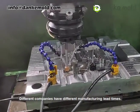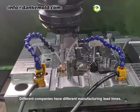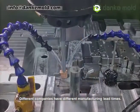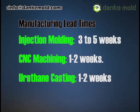Different companies have different manufacturing lead times. In general, an injection molding project needs three to five weeks, while CNC machining and urethane casting usually take one to two weeks.